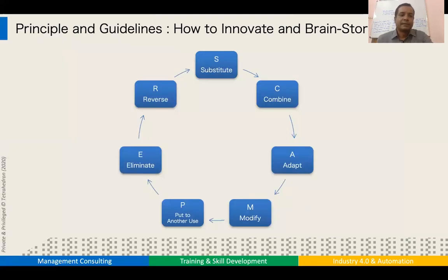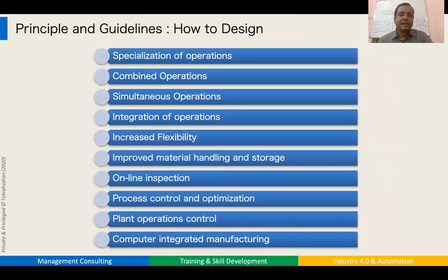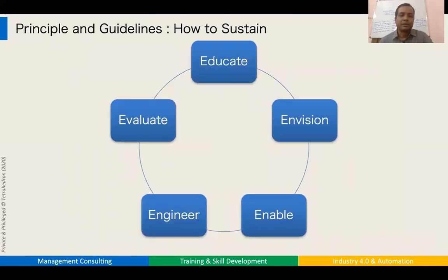I will also share scientific principles and guidelines on how to innovate and brainstorm using a methodology called SCAMPER to identify different possible automations for your process. I will share the 10 guidelines for designing low cost automation. Additionally, I will cover how to sustain automation — how to educate people, how to envision the project, how to enable them to design it, how to engineer the product, and how to evaluate successful implementation.